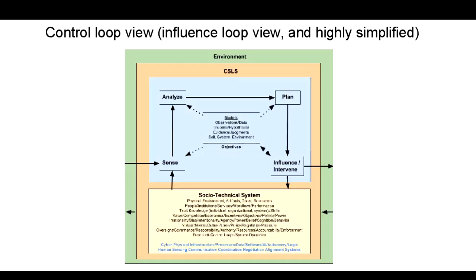In the blue font at the bottom and the blue box at the top are additional elements we see as necessary to turn a socio-technical system into a cyber social learning system. We imagine that these systems are now cut through with cyber physical infrastructure—various kinds of sensing modalities, processing, collection of data, lots of software, AI analytics, autonomy, and logic of control.